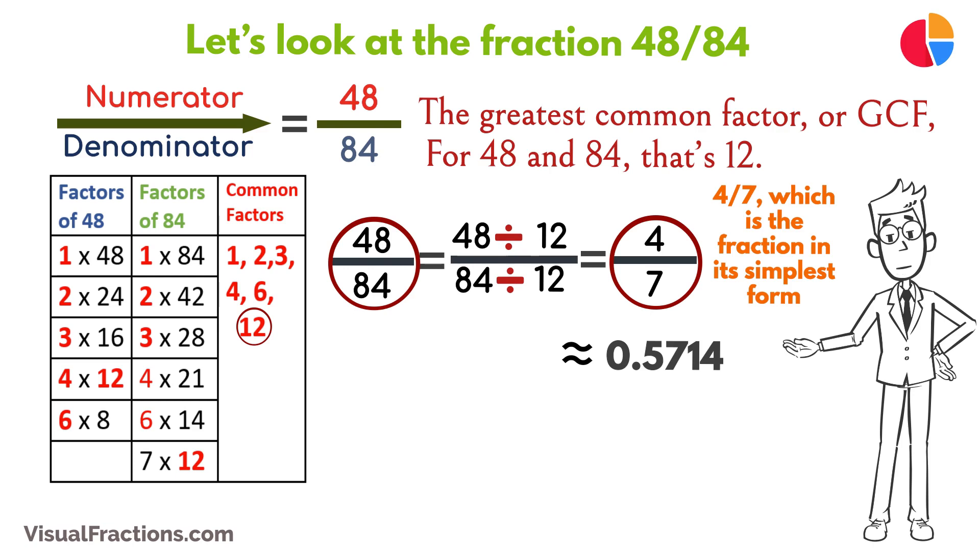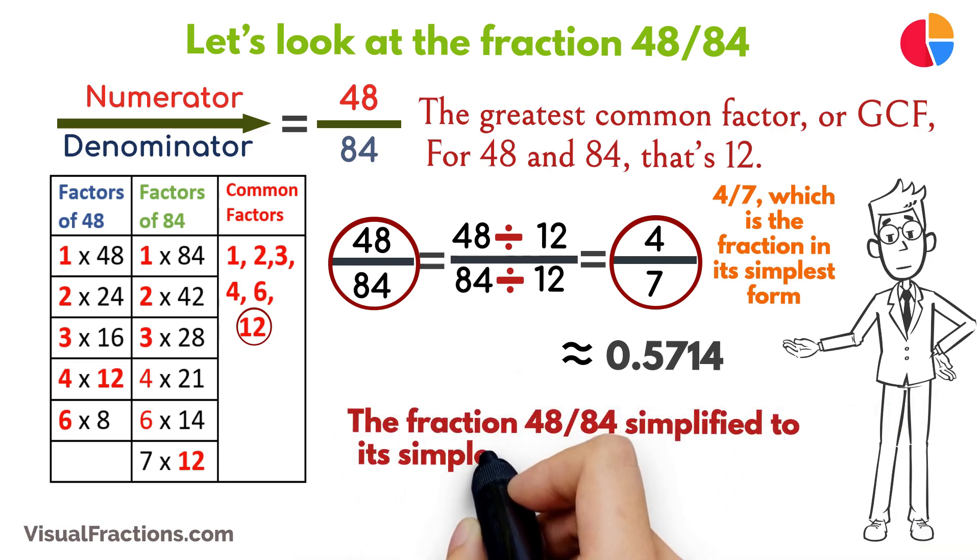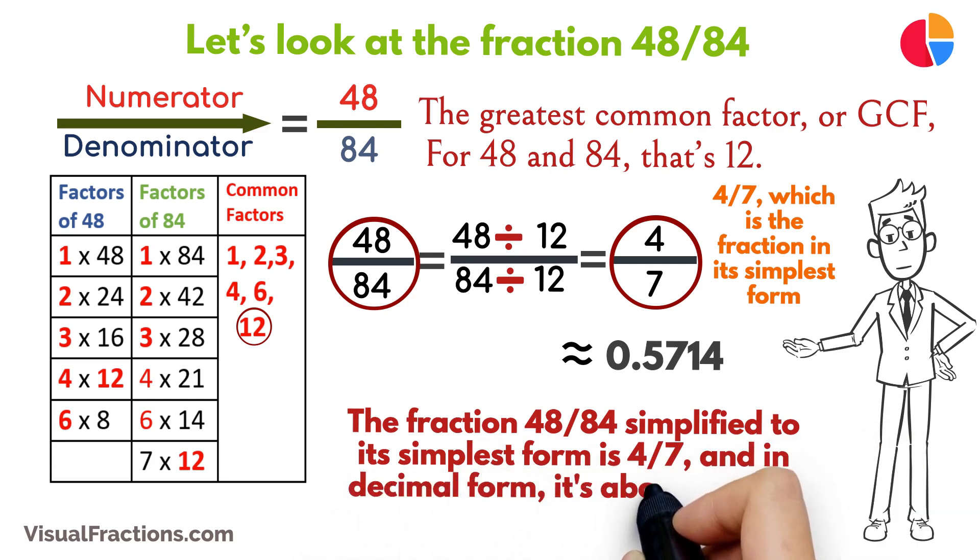So, there you have it. The fraction 48/84 simplified to its simplest form is 4/7, and in decimal form, it's about 0.5714.